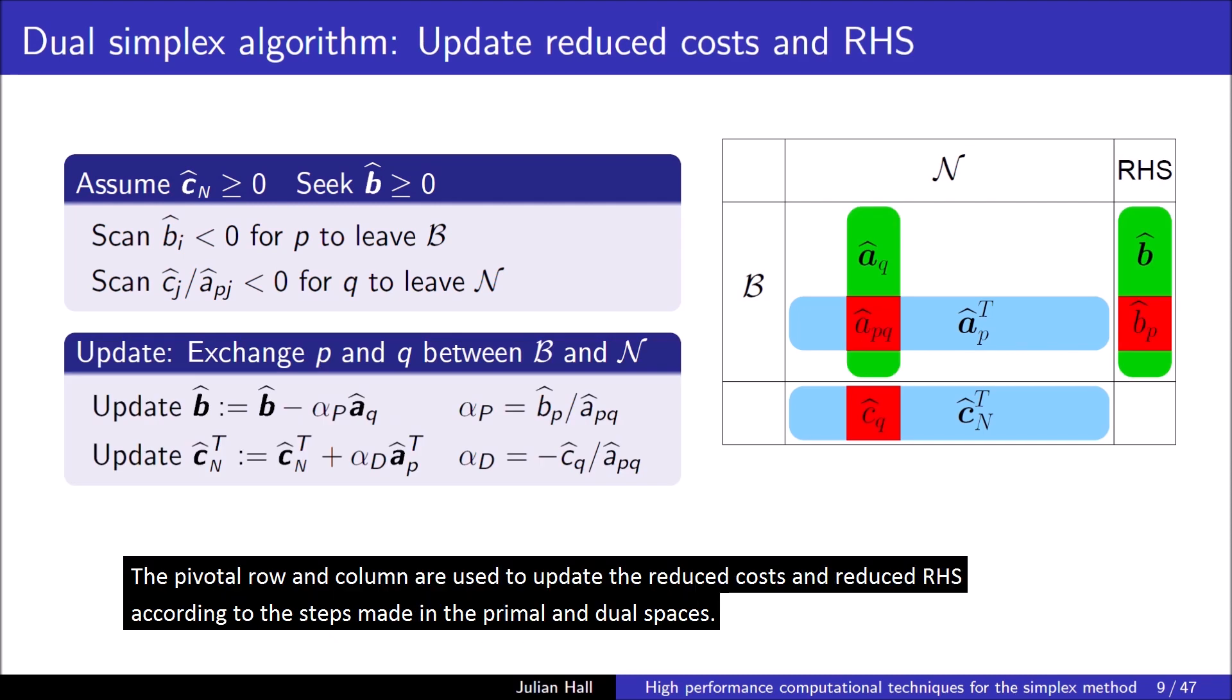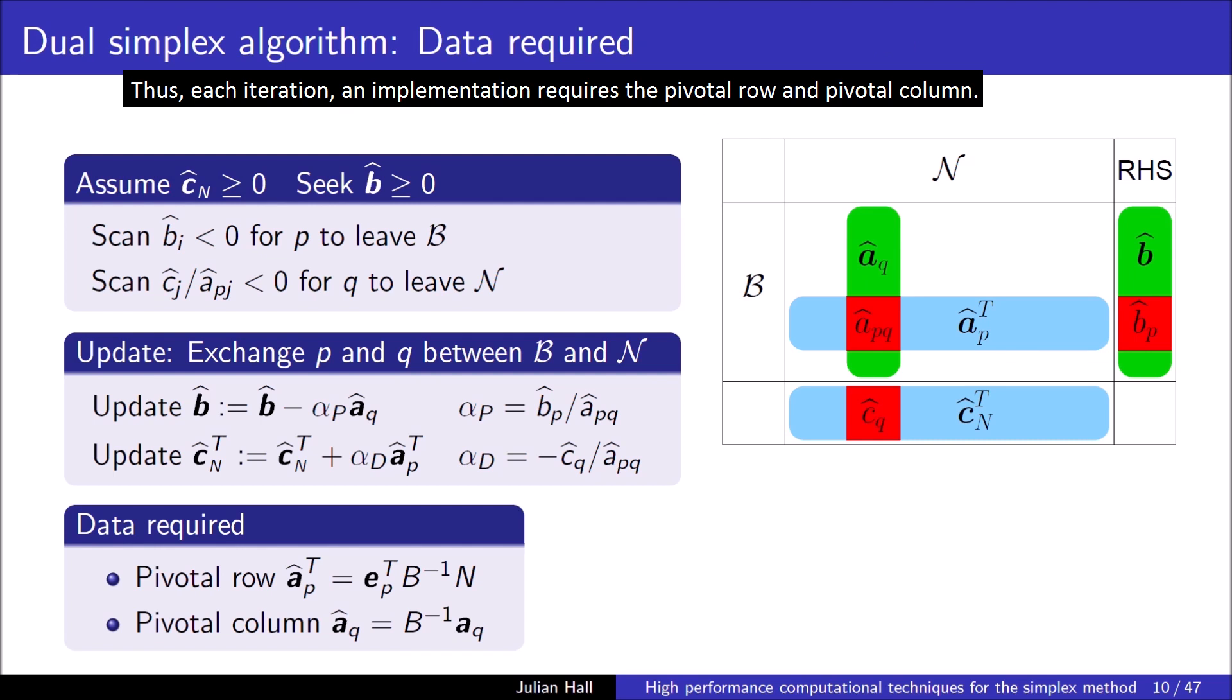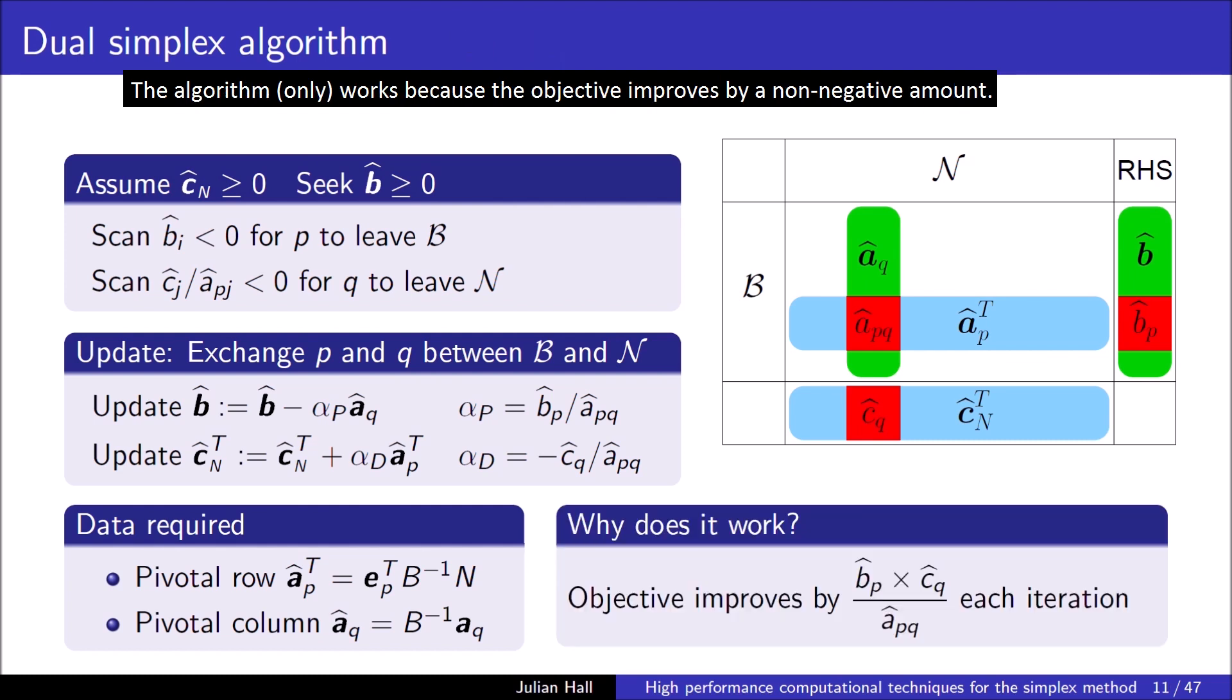First, it scans the primal infeasibilities for an index P to remove from the basic set. Then it performs a ratio test between entries in the pivotal row and the reduced costs to determine the index Q to remove from the non-basic set. The indices are then exchanged between the two sets. The pivotal row and column are used to update the reduced cost and reduced right-hand side according to the steps made in the primal and dual spaces. Thus, each iteration and implementation requires the pivotal row and the pivotal column. The algorithm only works because the objective improves by a non-negative amount.